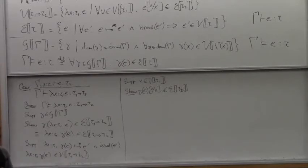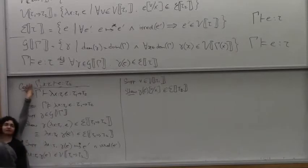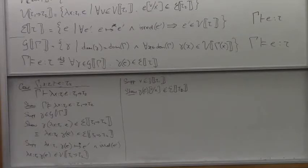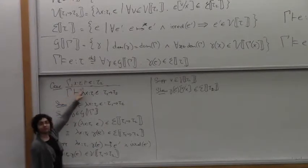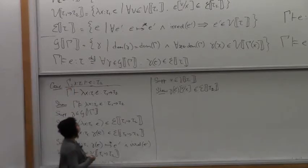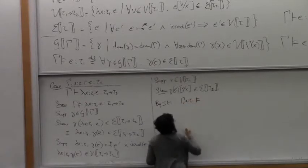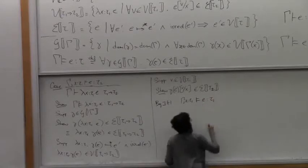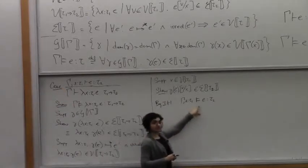We haven't used an induction hypothesis yet, have we? Since we know that e is well-typed — it has type tau 2 under the extended environment — we know by the induction hypothesis that under gamma, x colon tau 1, semantically e behaves like it has type tau 2. We get that from the induction hypothesis here. And this is a double turnstile.